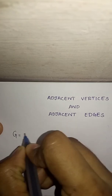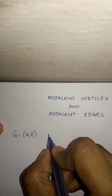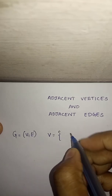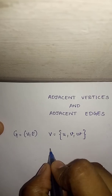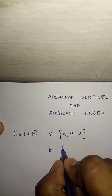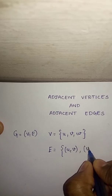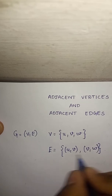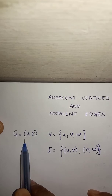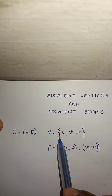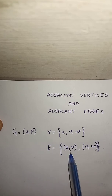If a graph G is equal to ordered pair V, E, and V is the vertex set containing the vertices U, V and W, and E is an edge set consisting of edges UV and VW. So we are going to construct this graph first. We are going to draw the vertex set and there are two edges.